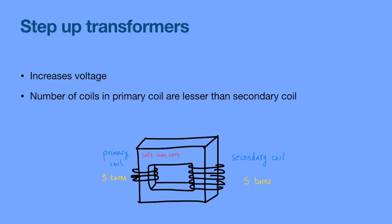There are two types of transformers: a step-up transformer and a step-down transformer. A step-up transformer, as the name suggests, increases the voltage. The number of coils in the primary coil will be less than the number of coils in the secondary coil.